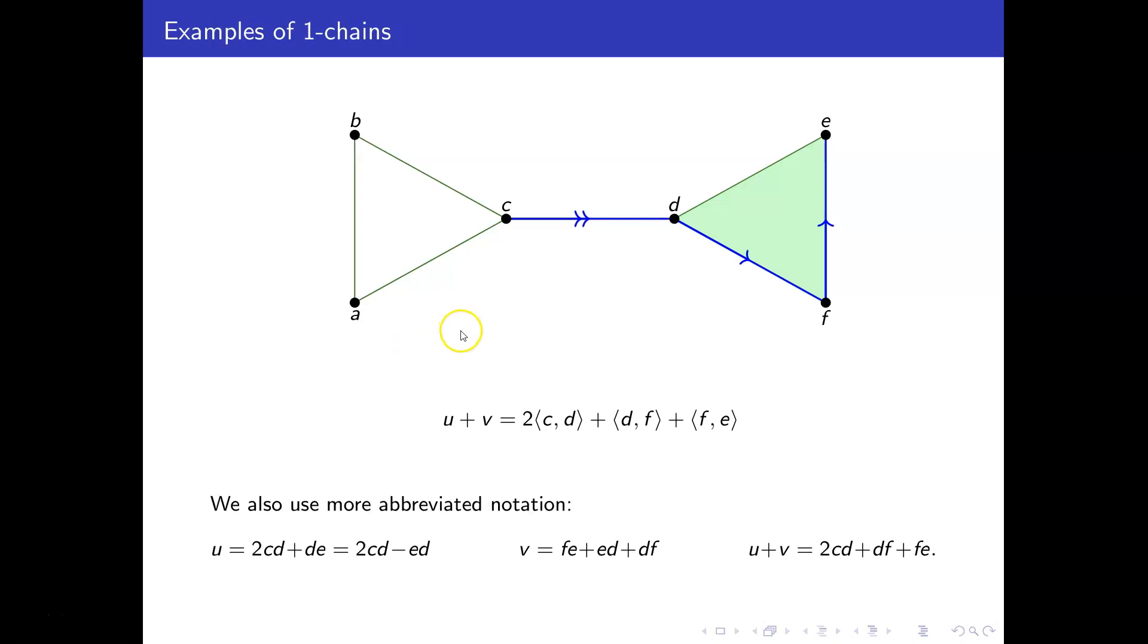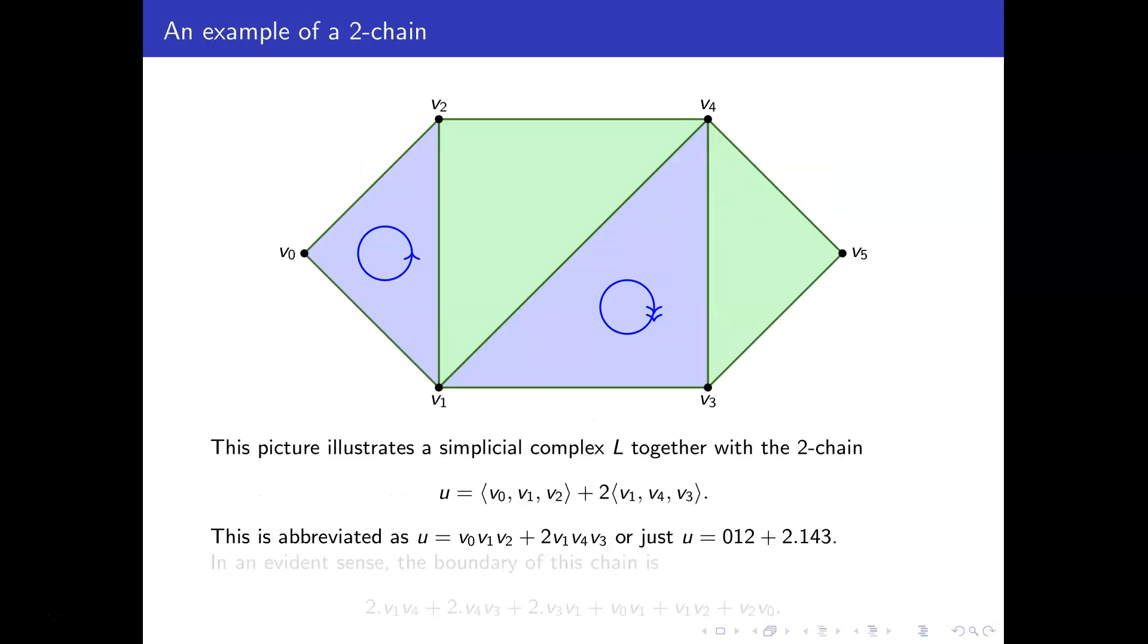Well, quite often we'll use abbreviated notation for this sort of thing. Instead of writing all these pointy brackets and commas and things, I'll just write u as 2cd plus de, or de is the same as minus ed, so that's 2cd minus ed. And v is, we'll write as just fe plus ed plus df. And so u plus v as shown here, it's 2cd plus df plus fe.